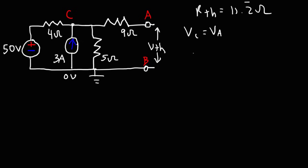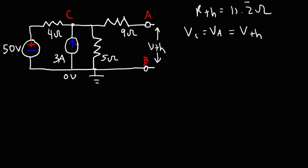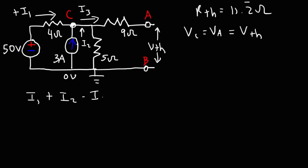Since Vb is 0, the Thevenin voltage will be equal to Va. So if we can find Vc, that equals the Thevenin voltage. We're going to use nodal analysis to get the job done. Focusing on point C and the currents entering and leaving: I1 is going into point C (positive), I2 is also flowing into the junction, and I3 is leaving. According to Kirchhoff's current law, I1 + I2 - I3 = 0.